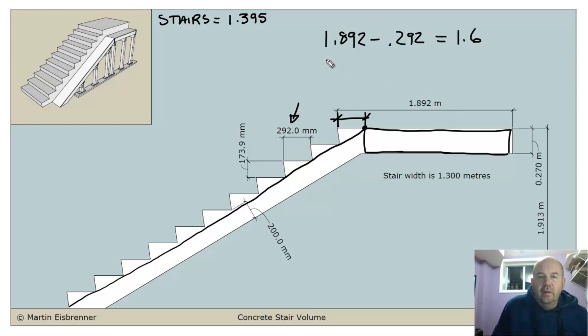Now, the thickness of the landing is right there. Here he is. Right there. So I'm going to go the length of the landing, 1.6 times 0.27 for the thickness of the landing, times the width of the stair. Remember, it is 1.3 width of stair. Right there. That's the width of the stair.